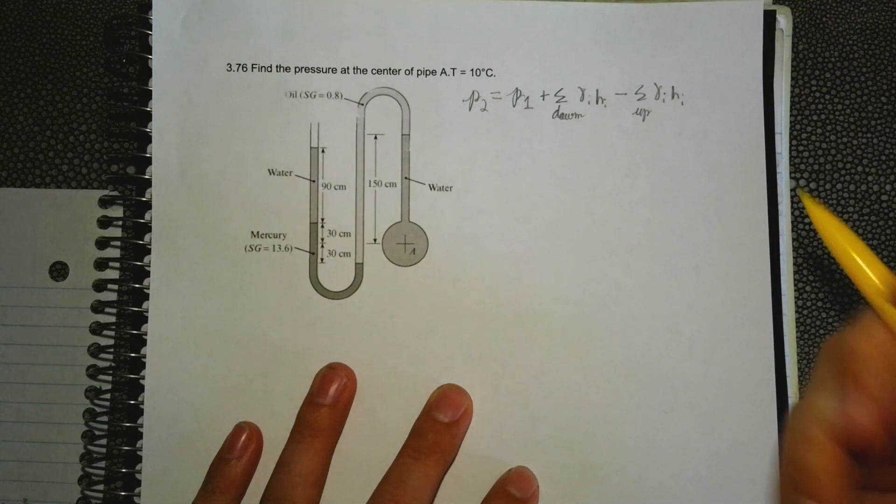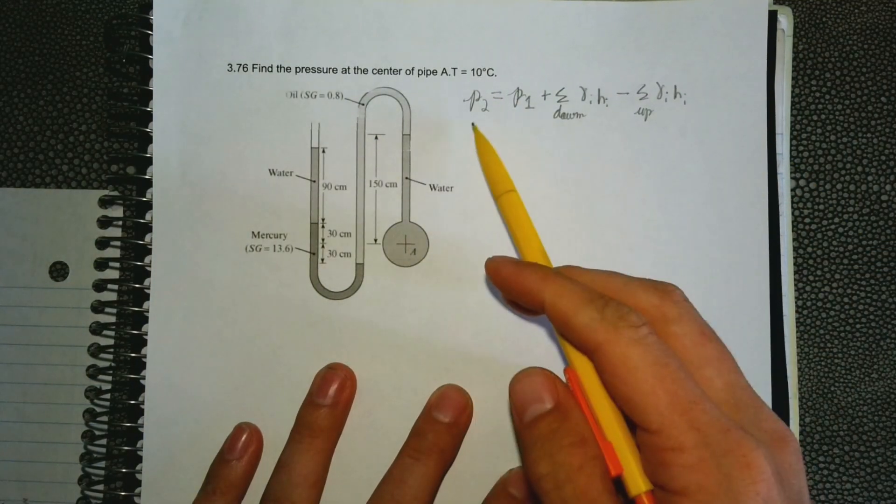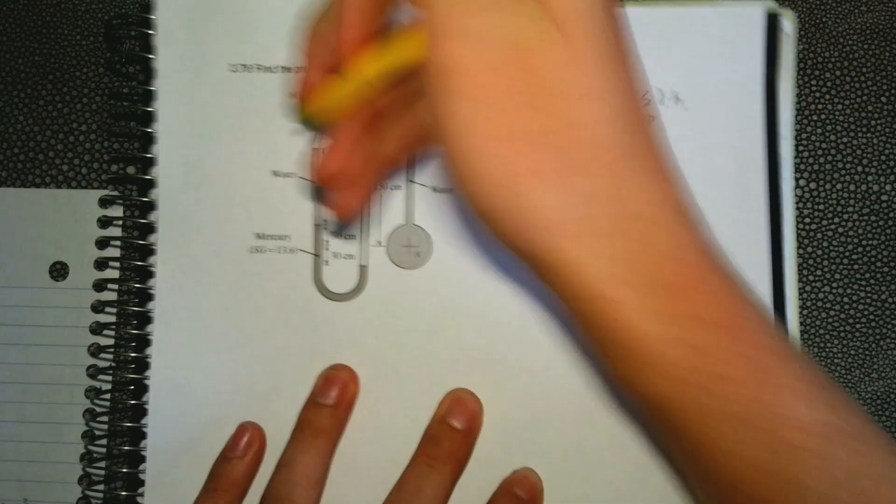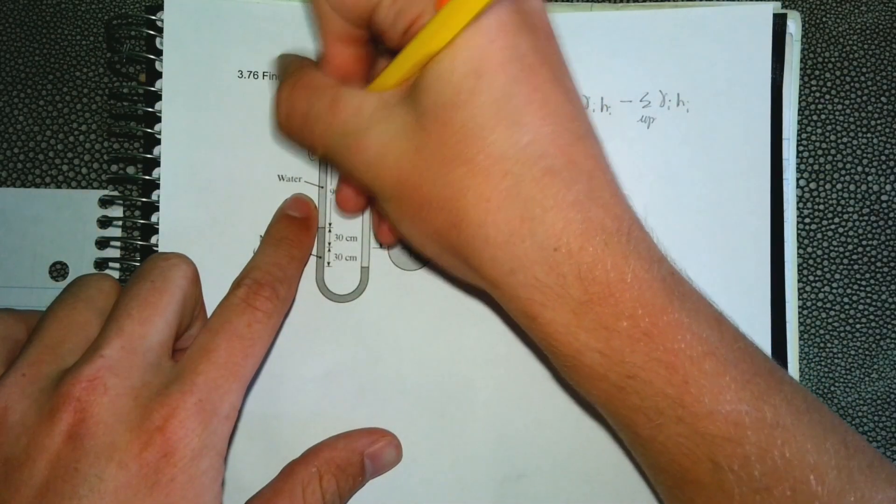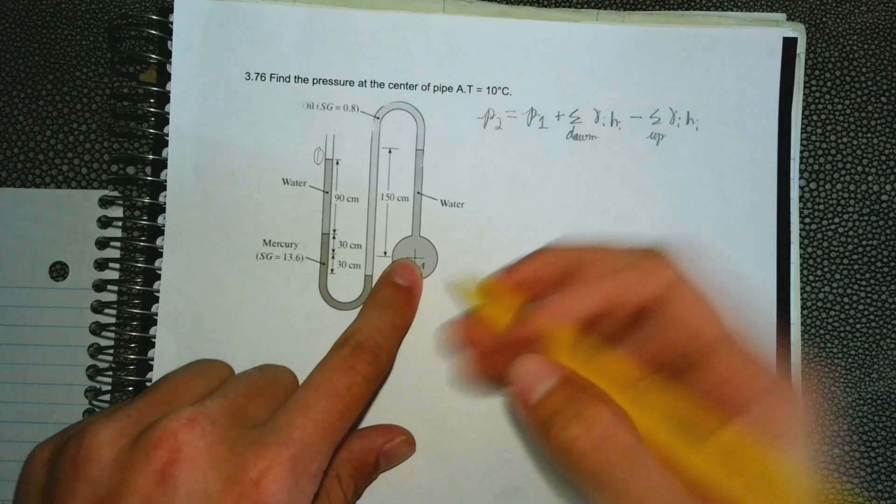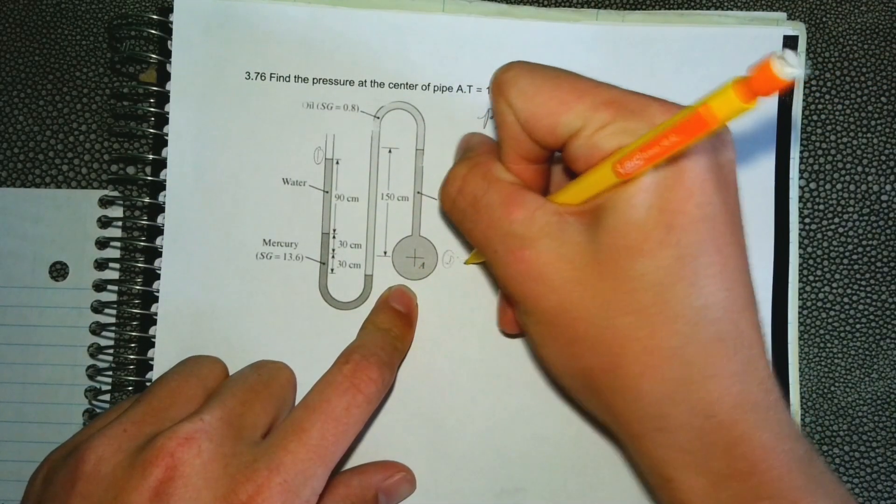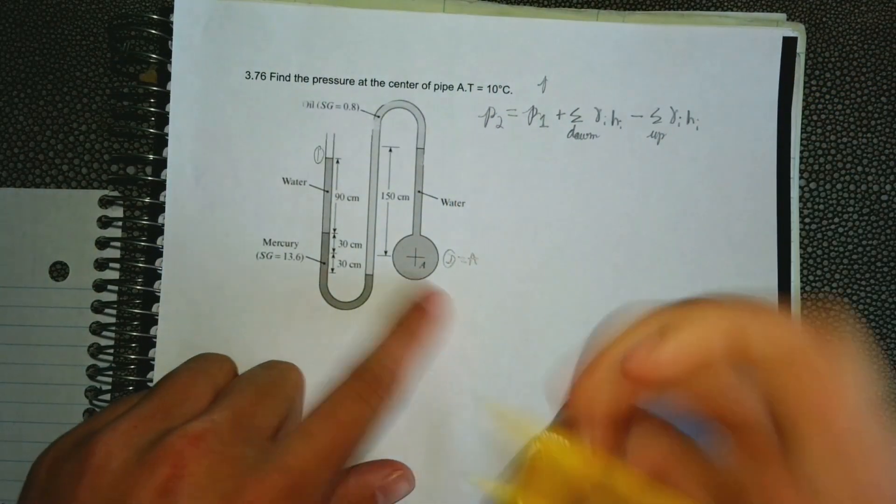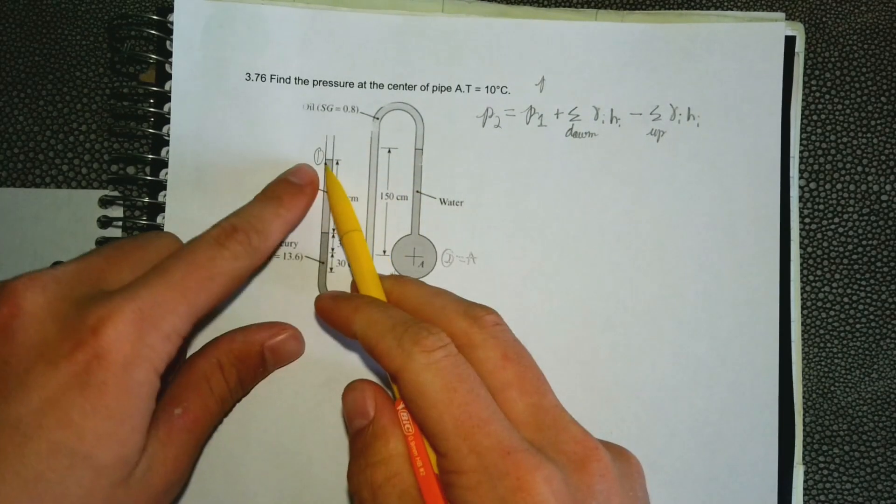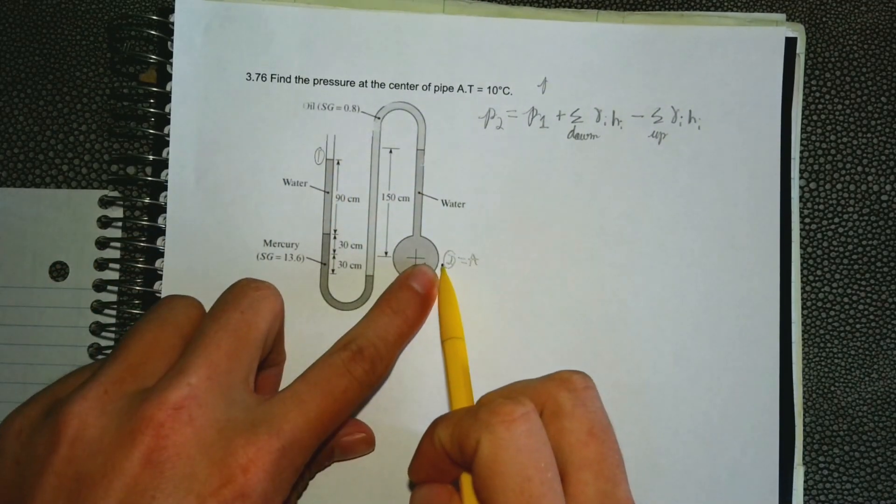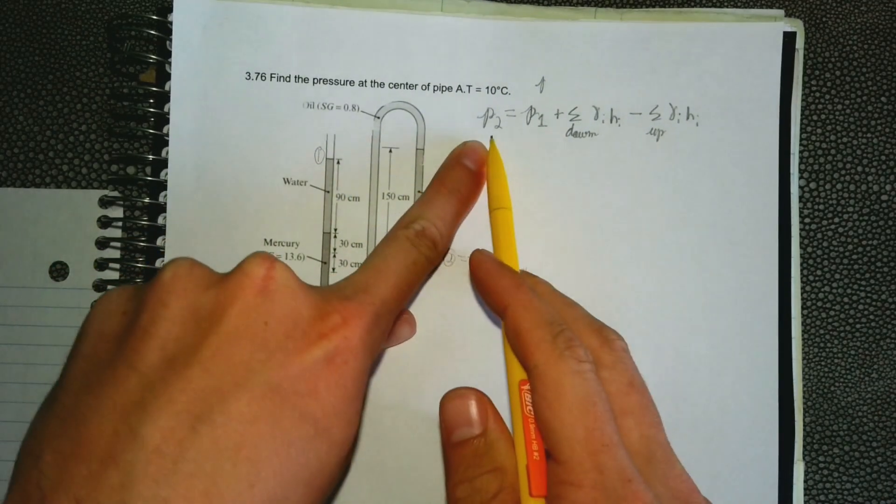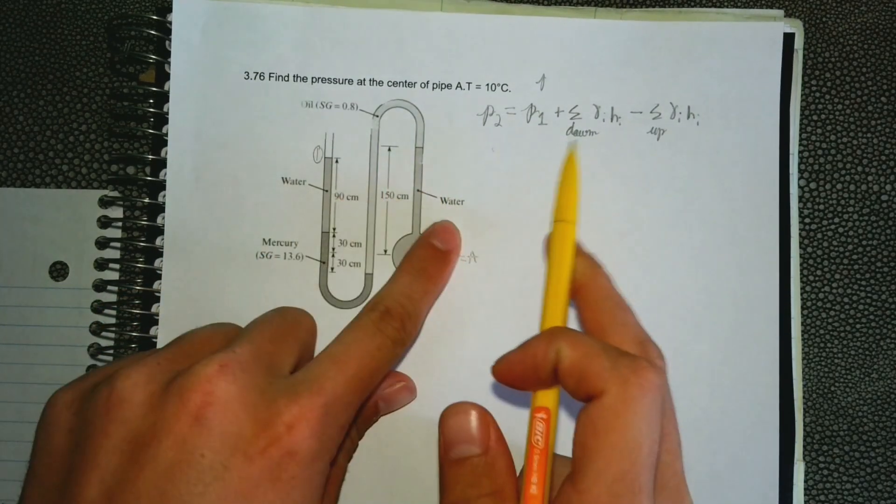All this equation is, I'll number this, so we're going from point 1 and then point 2 is also equal to A, okay? So all this equation is, is going from point 1 to point 2. Point 2 we can find the pressure by doing this equation.